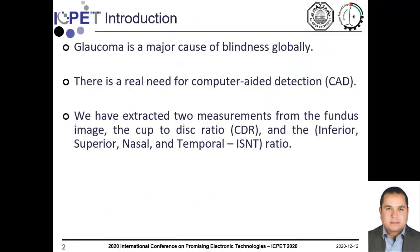First of all, let's talk about glaucoma. It is called also the sneak of sight. It is a disease that affects the human eye and is a major cause of blindness globally. It damages the optic nerve cells that transmit visual information to the brain. There is a real need to automate the detection process of glaucoma using different features like cup-to-disc ratio and ISNT ratio.